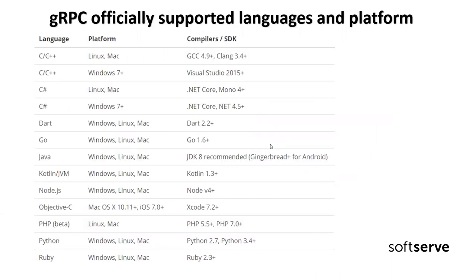Here we have a list of supported languages and platforms for gRPC. We can see most popular languages like C#, Java, Node, Python, and so on.